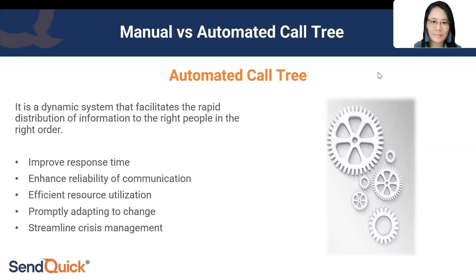The fourth benefit is adaptability to changes. In any organization, people come and go. With a manual call tree, you might be contacting someone who has already left the company, while the new person never receives the call. Automation makes it easy to update the contact list, and changes to the org chart no longer require manually restructuring the tree.